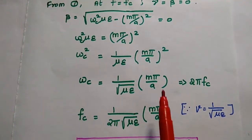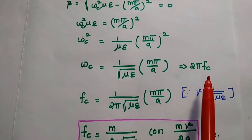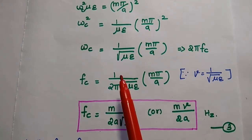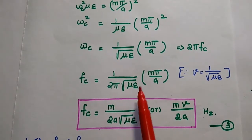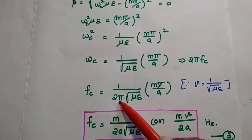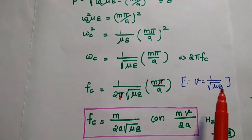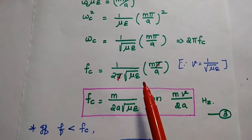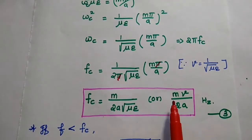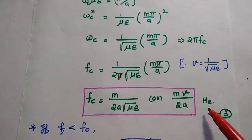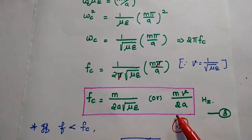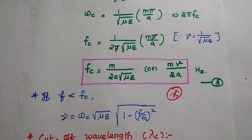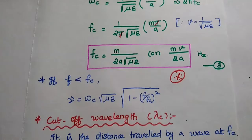Since ωc = 2πfc, we can find the cutoff frequency fc = (1/2π) × (1/√(με)) × (mπ/a), which simplifies to fc = m/(2a√(με)), or in terms of velocity of propagation v = 1/√(με), fc = mv/(2a) in hertz. This is the third equation — a very important formula to find the cutoff frequency for TE and TEM waves in parallel planes.